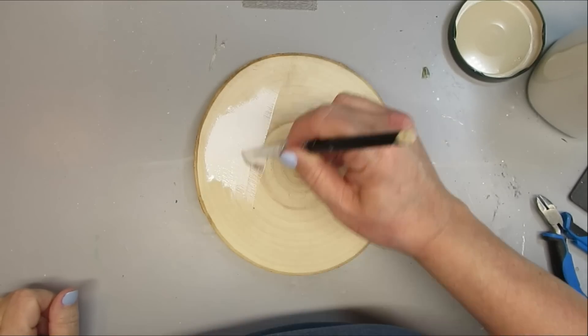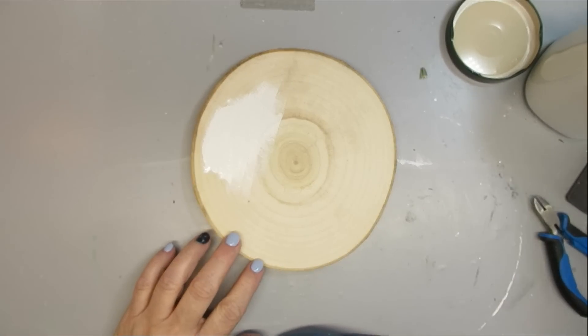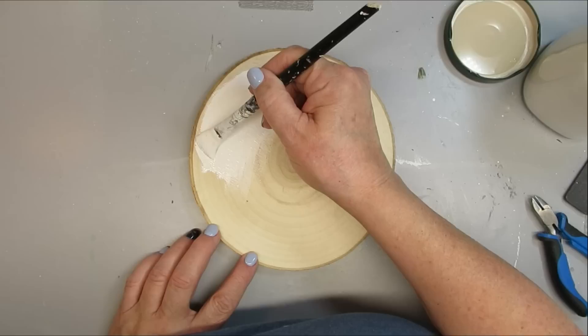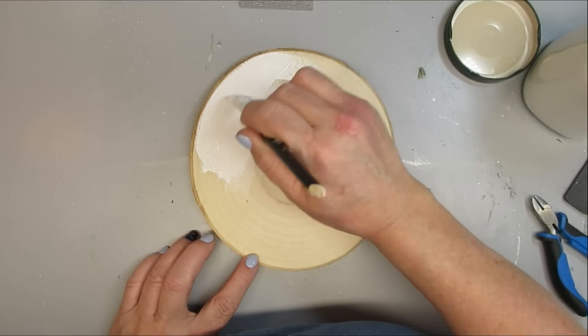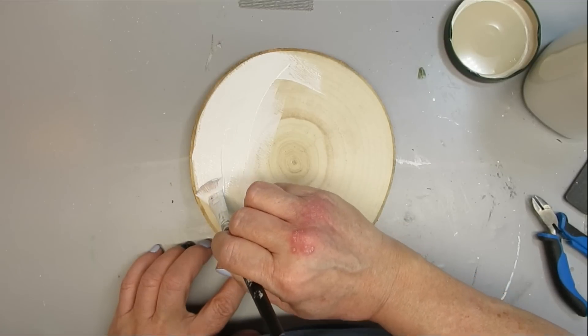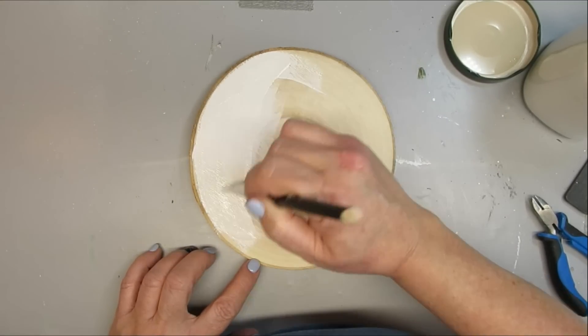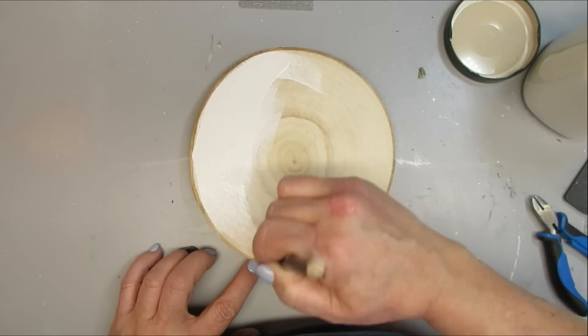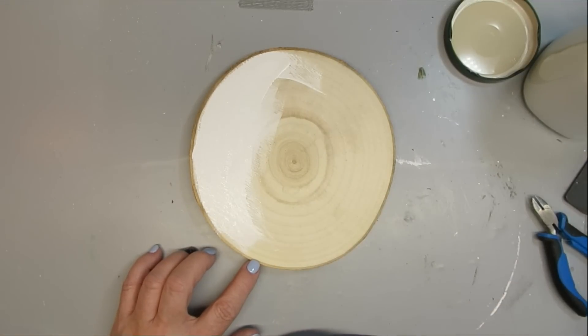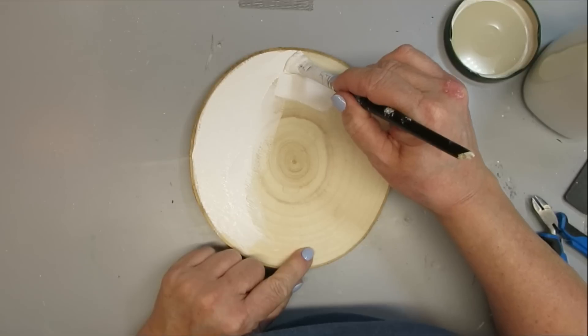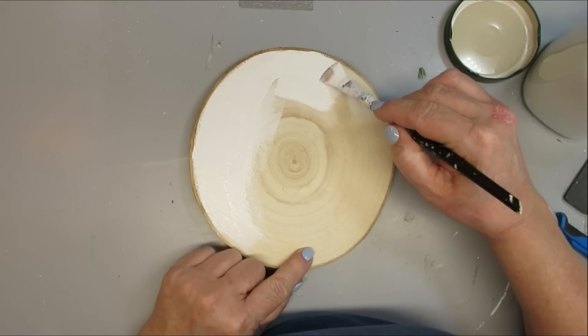Another material that is used in farmhouse decor a lot are wood slices and wood pieces and things. This one is a seven by seven and a half inch - I believe it was a Michaels purchase, but it was donated to me by my sweet friend Kimberly who sent me a whole bunch of different boxes of supplies. So thank you Kimberly if you're watching. I truly appreciate it and I'm working through all your supplies.